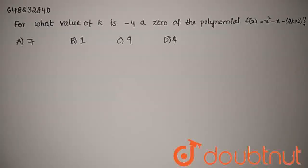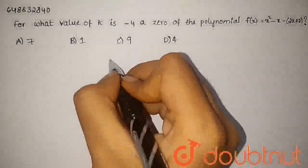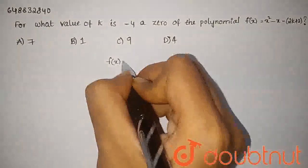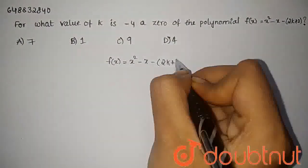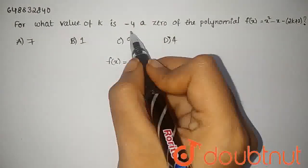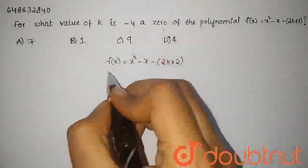For what value of k is minus 4 a zero of the polynomial f(x) equals x square minus x minus 2k plus 2? f(x) is equal to x square minus x minus 2k plus 2. And we're given minus 4 is a zero of the polynomial.